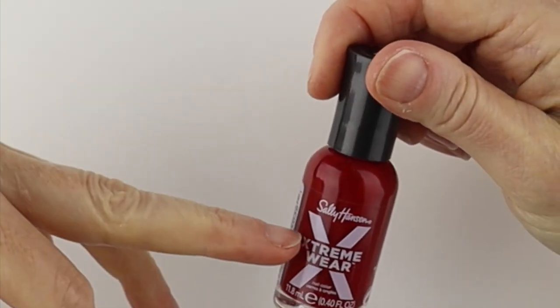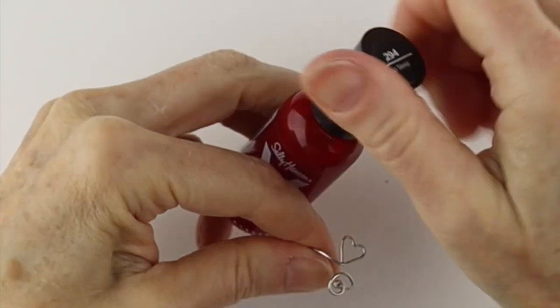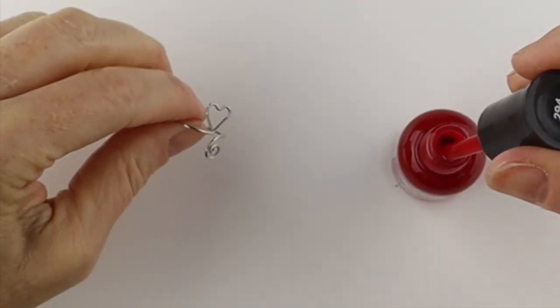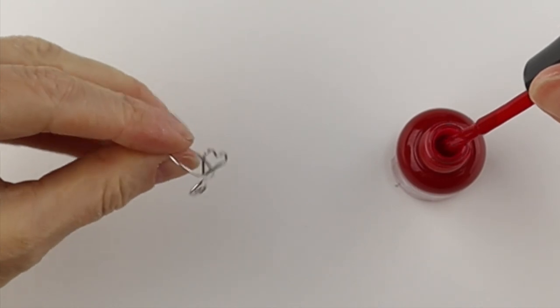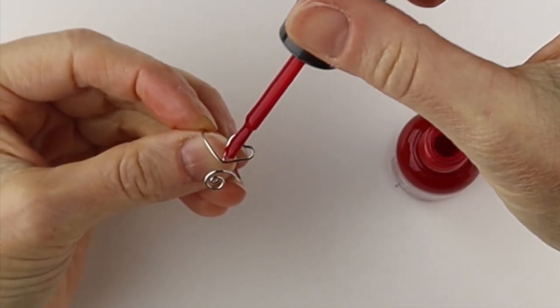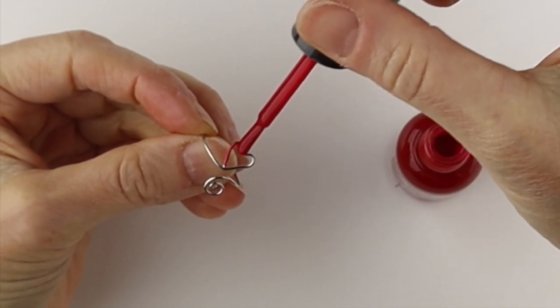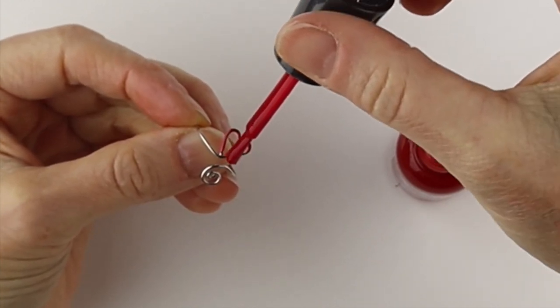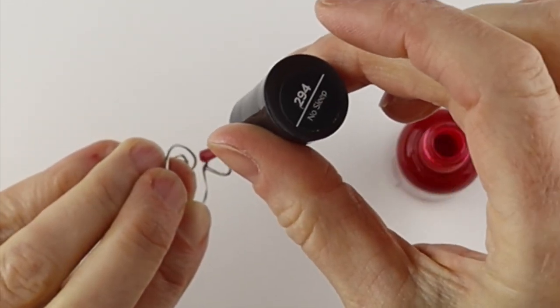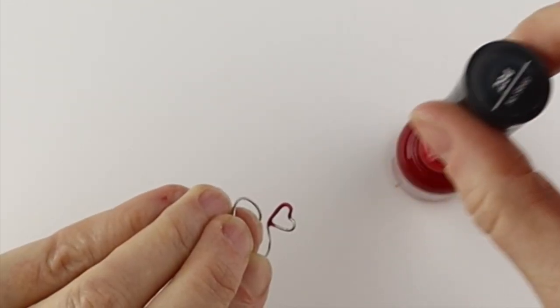I just have this Sally Hansen Extreme Wear. You can use any nail polish you want, and then I'm just going to take off the extra and we're going to paint just the heart. So just around here and then we can flip it. If you get too much, just take it off.